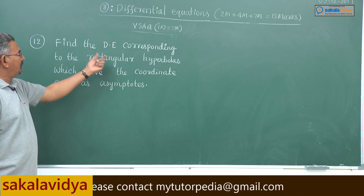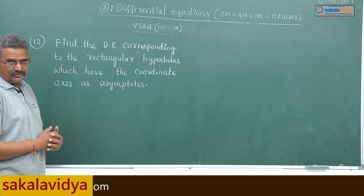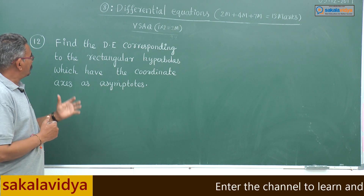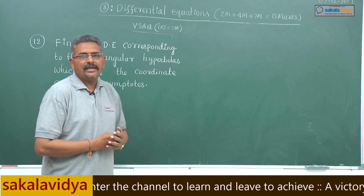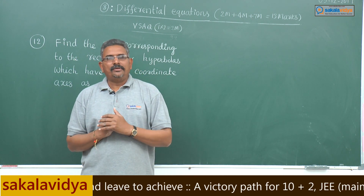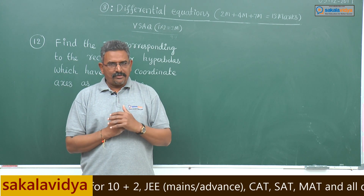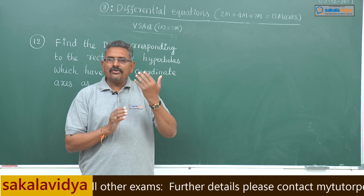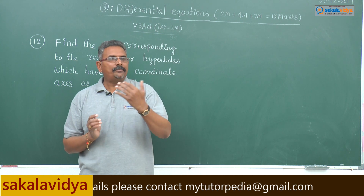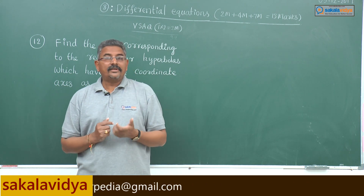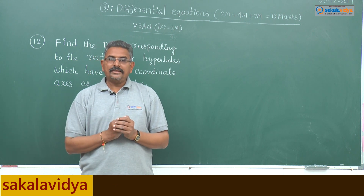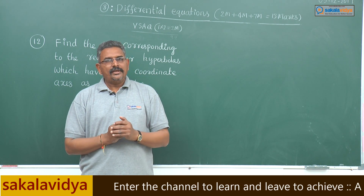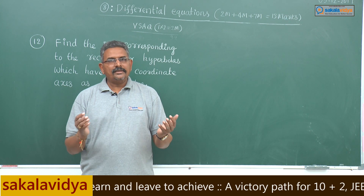Find the differential equation corresponding to the rectangular hyperbolas which have the coordinate axes as asymptotes. The standard equation of a rectangular hyperbola with coordinate axes as asymptotes is xy = c², where c is an arbitrary constant.